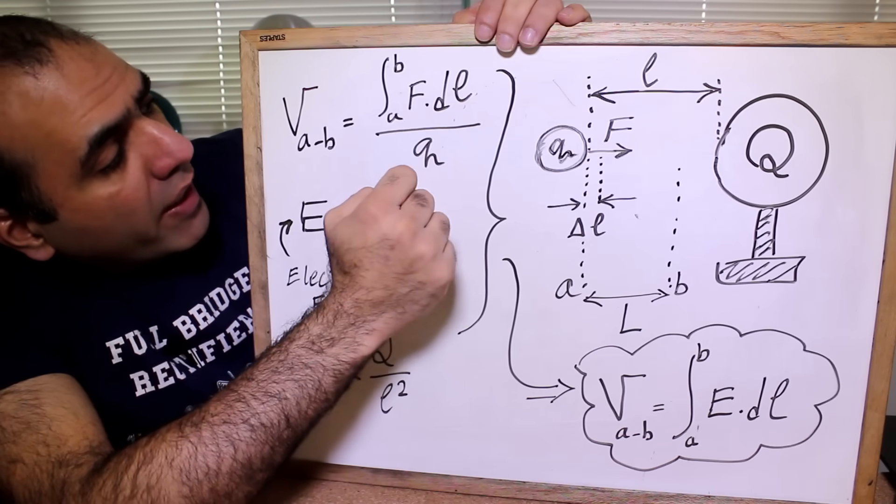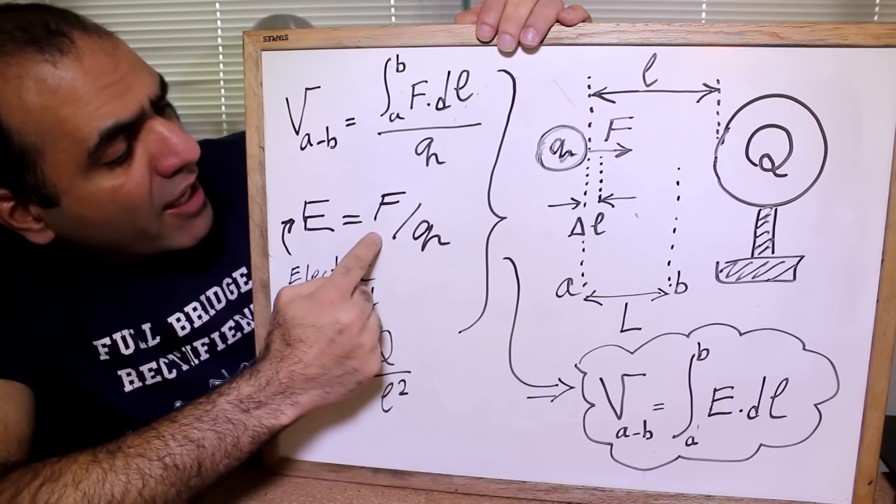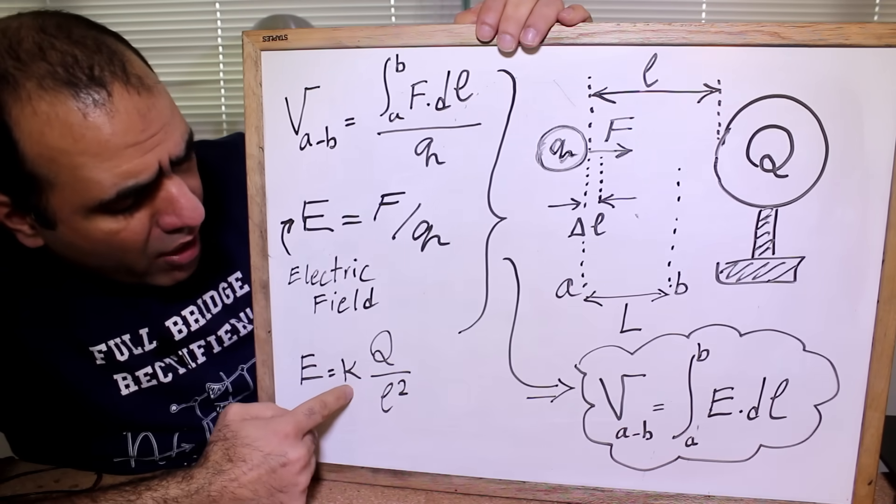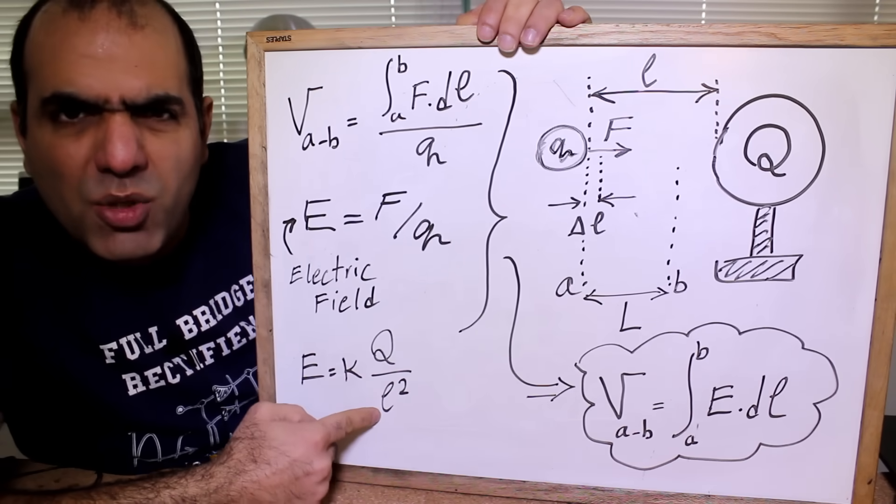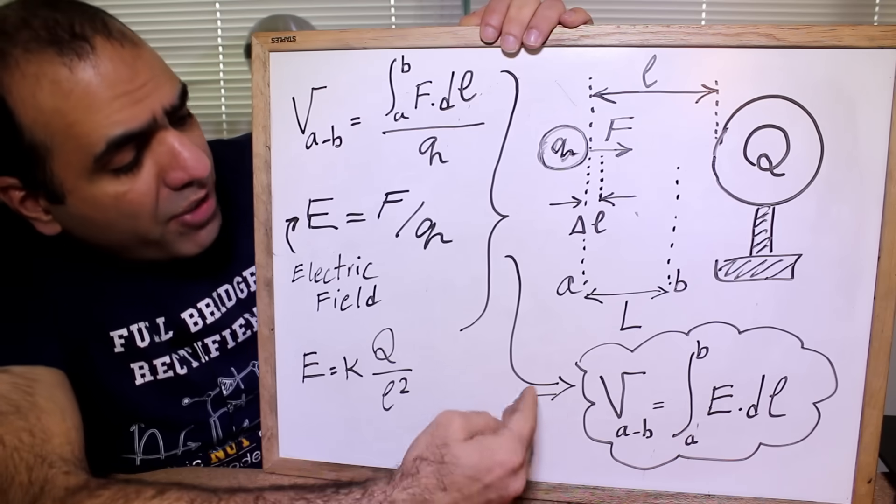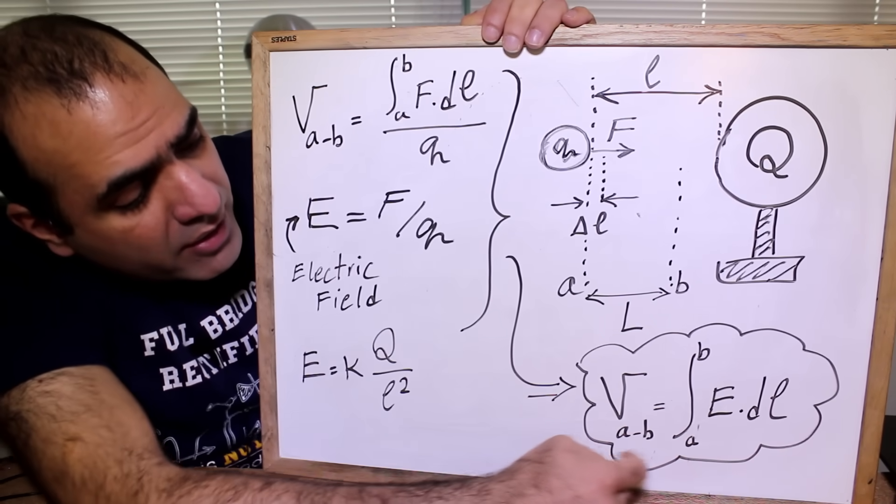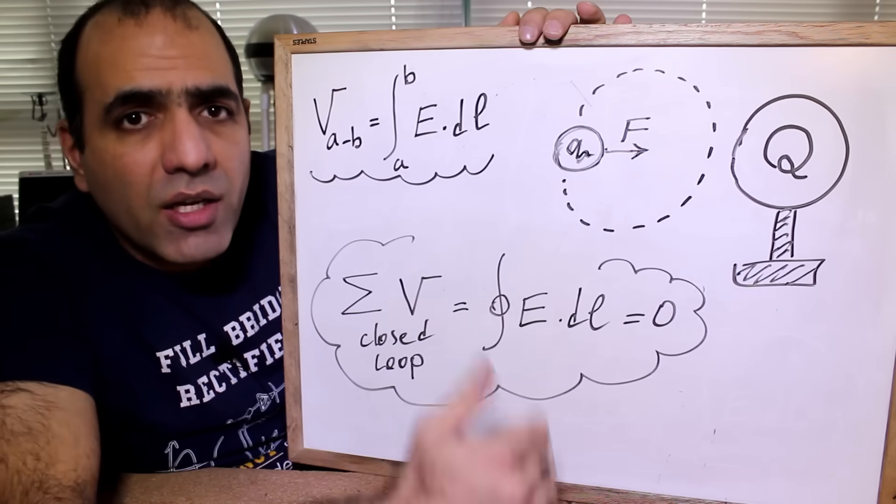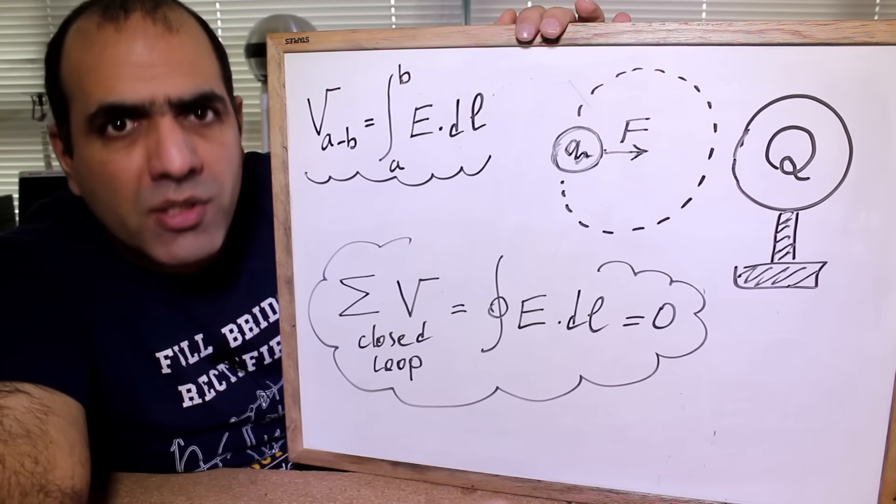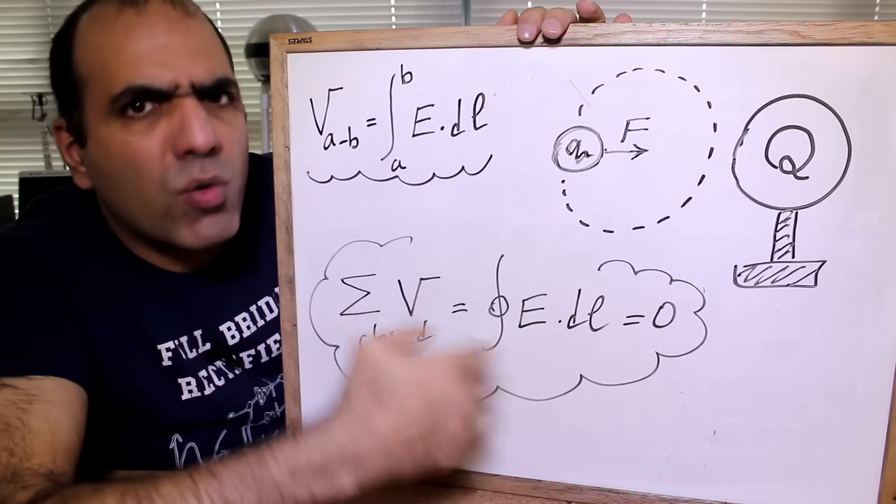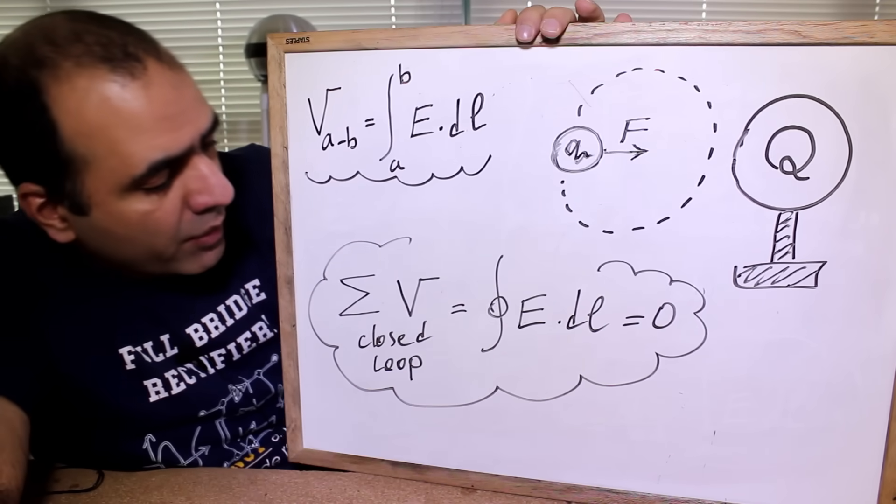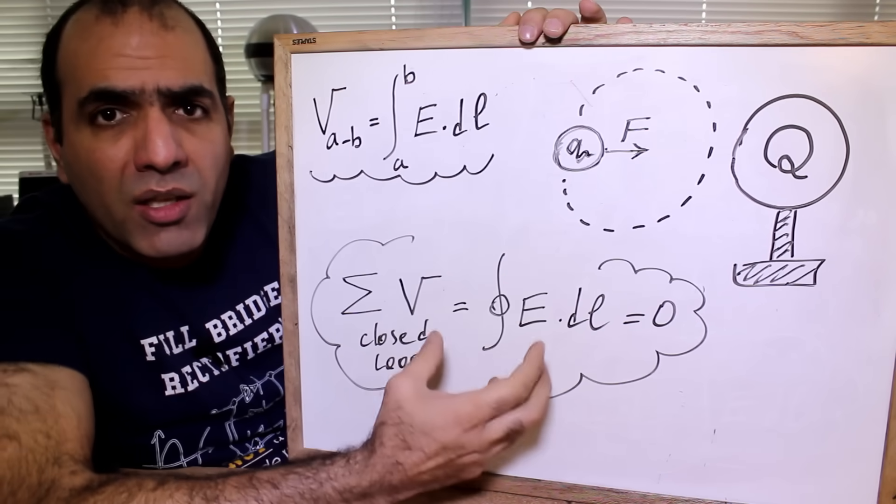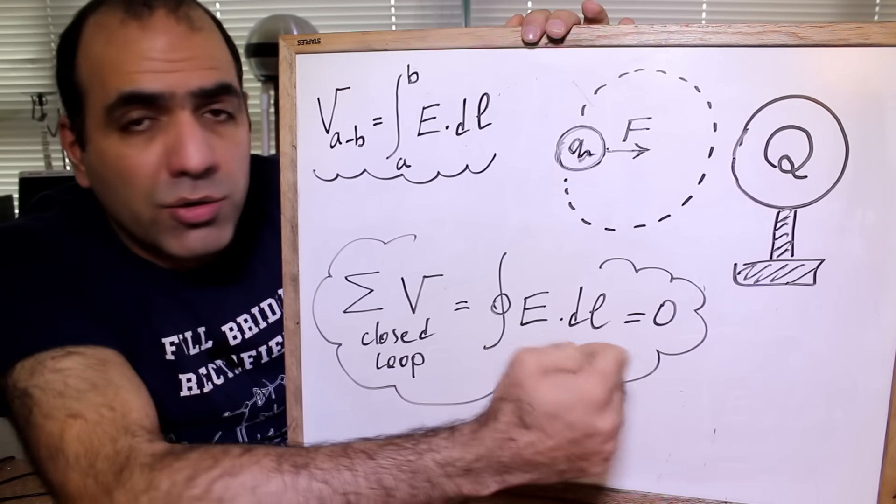q is not a function of L, so we can take it inside. And electric force divided by charge is defined as electric field, which is equal to a constant times Q divided by a square of distance. And from these, we conclude that voltage from point A to B is equal to the integral of E dL from point A to B. And like I said before, if we move the charge in a closed loop, the sum of all energies and so all the voltages in the loop will be zero. So in an electric field only, the sum of all voltages is the closed loop integral of E dL equal to zero.